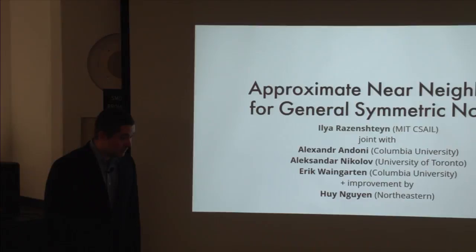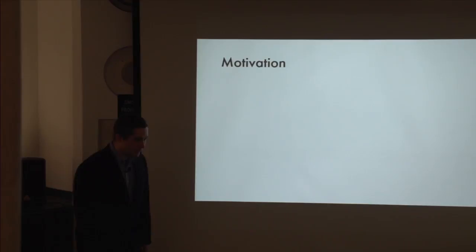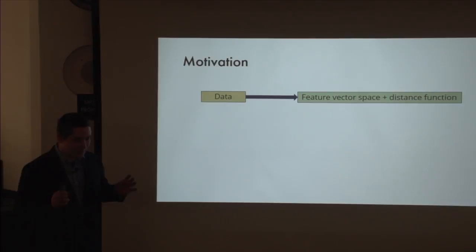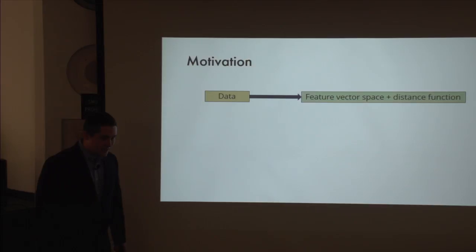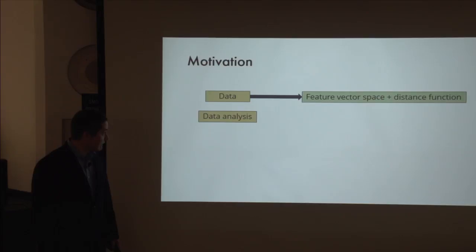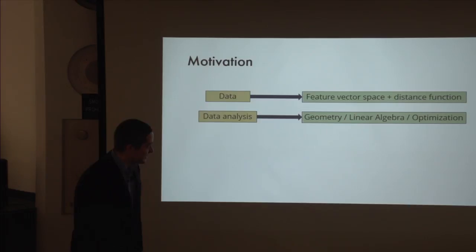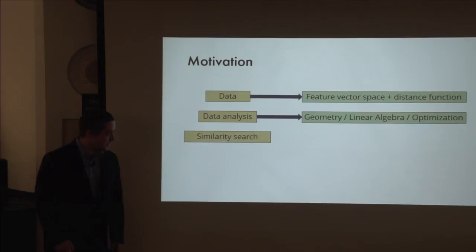As a brief motivation for why we should look at the approximate near-neighbors problem: we start with some data and use methods to convert it to feature vectors. On these feature vectors you usually have some distance functions. Then if you want to perform some computation on your data, it usually corresponds to some geometric linear-algebraic optimization problem in the feature space. As a concrete example, if you want to do similarity search on your data, you end up needing to solve exactly the nearest neighbor search problem in the feature space.